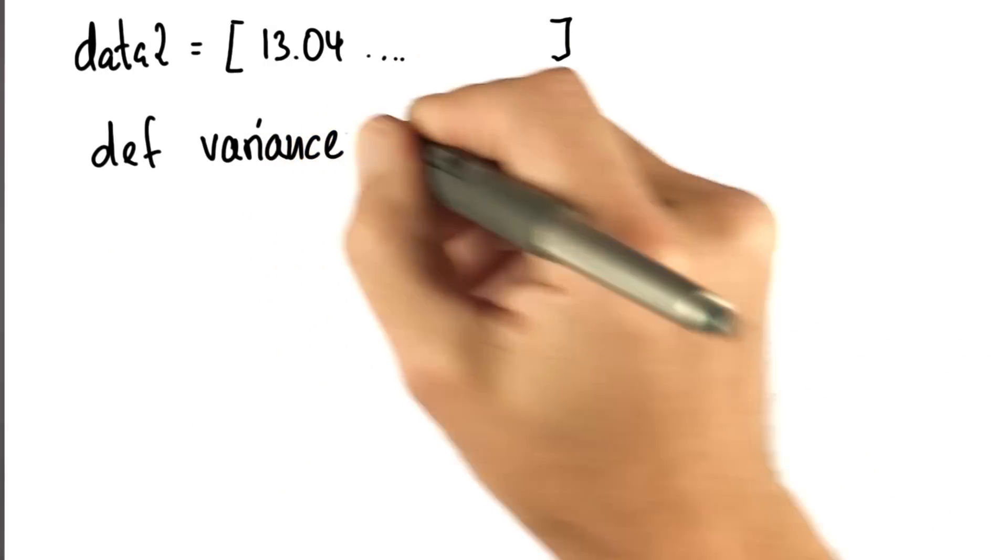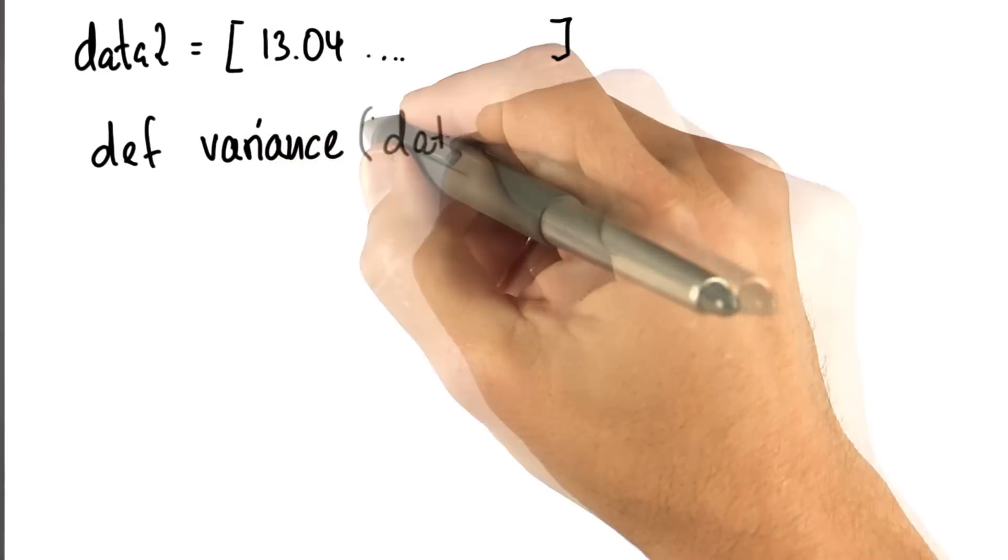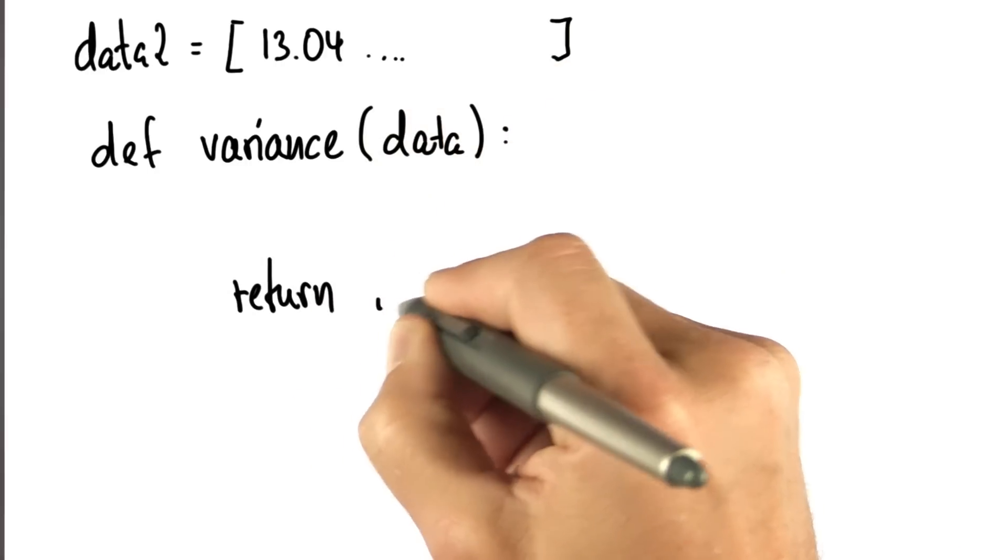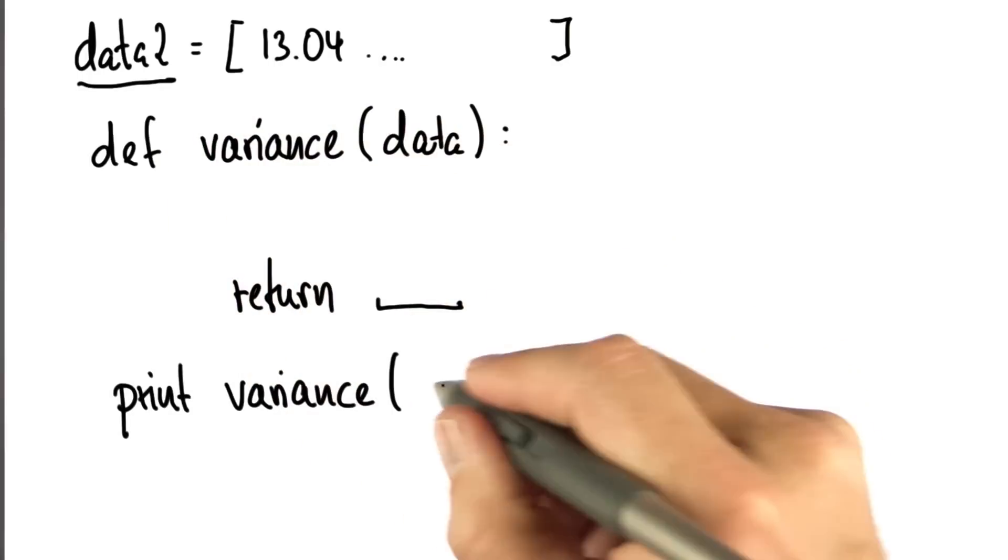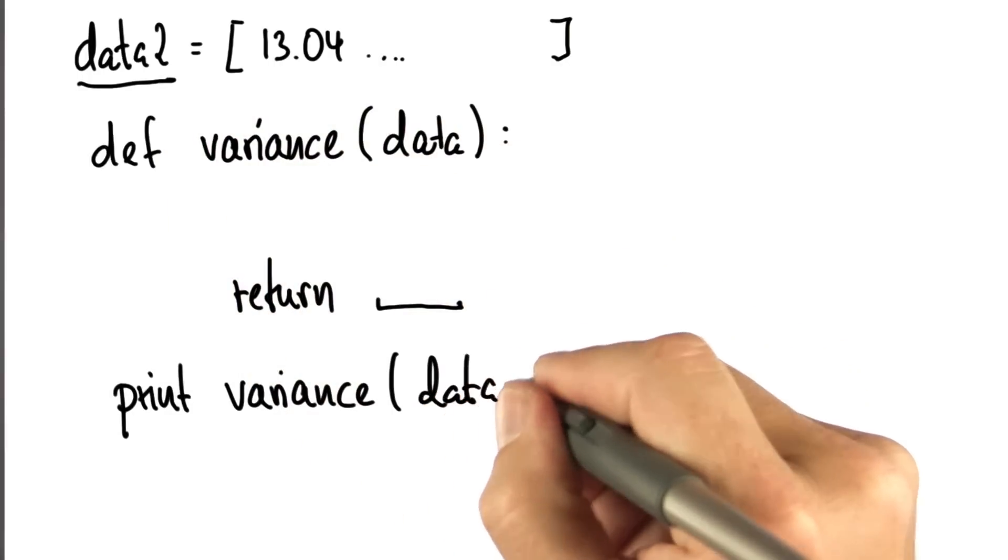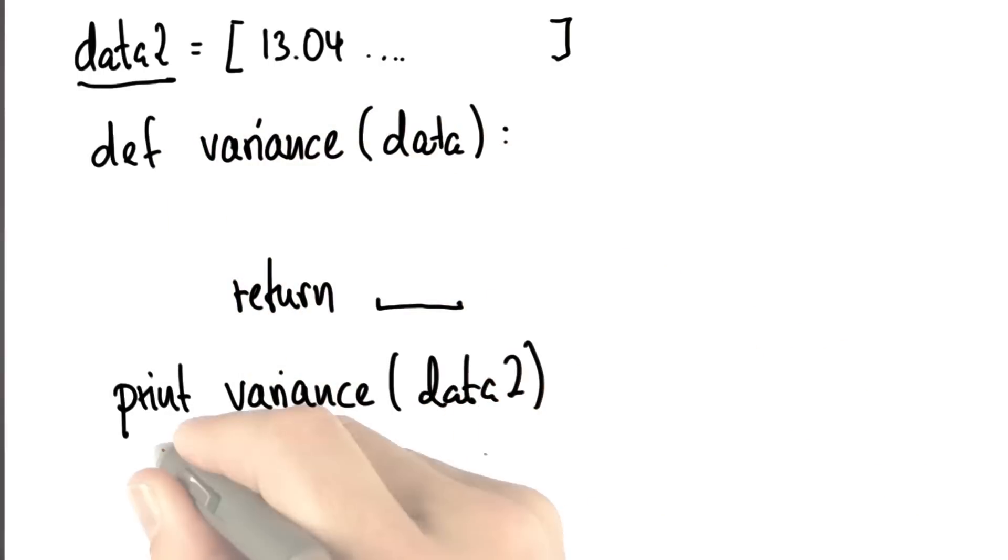And I want you to implement a function variance. It takes in data and returns a single number, which is the variance of the data. So for the data set I'll be giving you, it turns out the variance is 62.572.